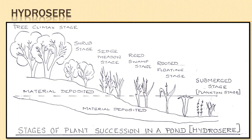To summarize hydrarch succession: it occurs in areas where water is present in abundance. It begins with small phytoplanktons, followed by submerged and free-floating plants, then rooted hydrophytes, sedges, grasses, scrubs, and finally trees. The transformation takes place from a pool of water to swamp, then marsh, and finally mesic conditions.